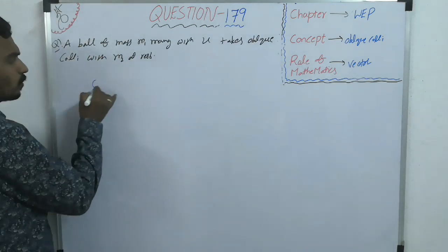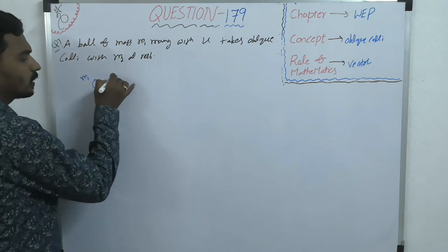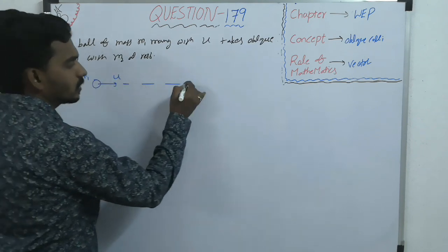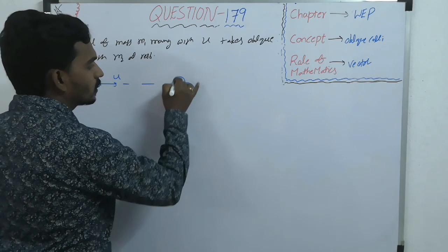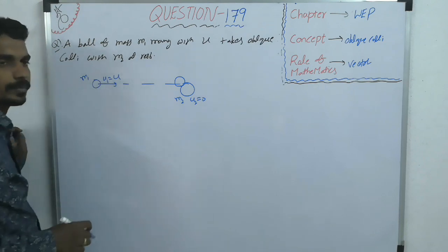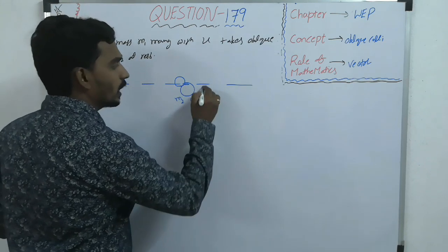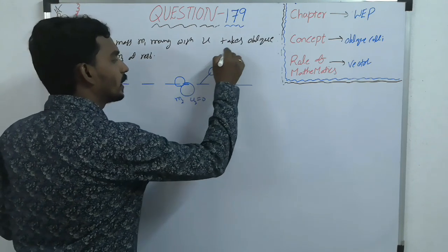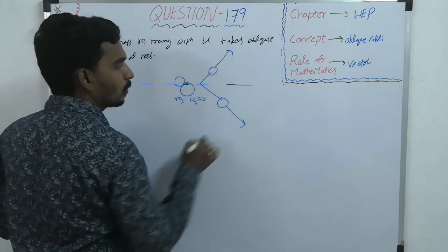Here one ball M1 moving with a speed U takes oblique collision with another mass M2 which is at rest, so U1 is U. Now after the collision what happens, they move in different directions, oblique collision.